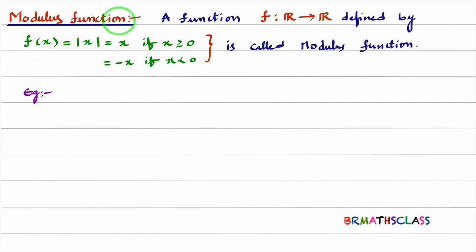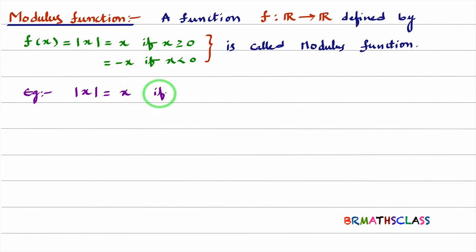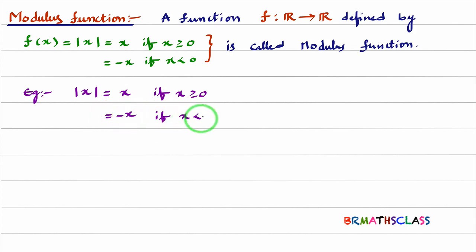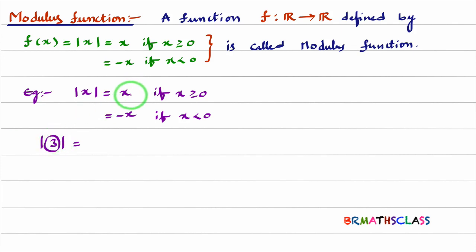We will try to understand how the function is defined with examples. Modulus of x is x when x is greater than or equal to 0, and modulus of x is minus x when x is less than 0. I will take modulus of 3. The expression 3 is greater than 0, so it comes to the first case. Modulus of x becomes x. So as 3 is a positive number, modulus of 3 is 3.